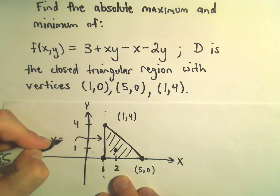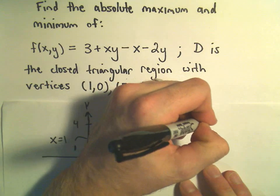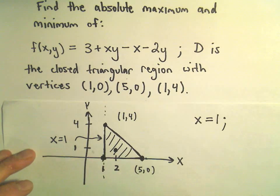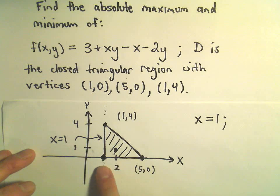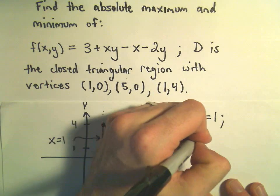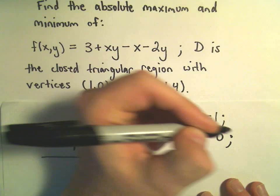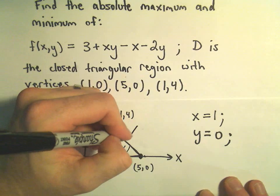To find the equation of this line that goes through 1 and 4, that's easy enough. That's just going to be the line x equals 1, so that's going to be one of our boundaries. The other boundary at the bottom, that's just going to be y equals 0, so that's not bad.